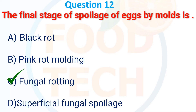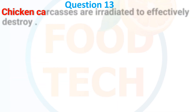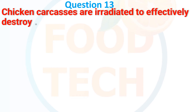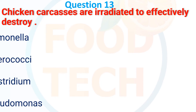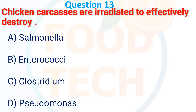Chicken carcasses are irradiated to effectively destroy: A, Salmonella; B, Enterobacter; C, Clostridium; D, Pseudomonas. The answer is A, Salmonella.